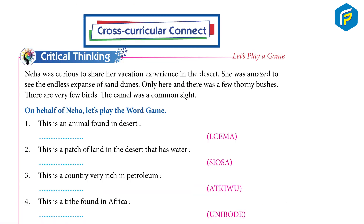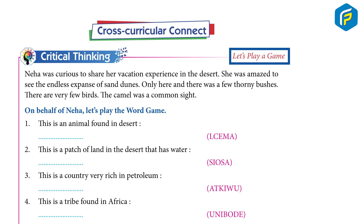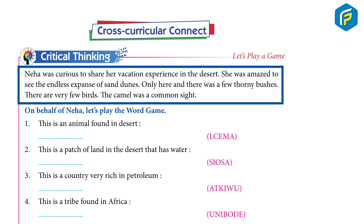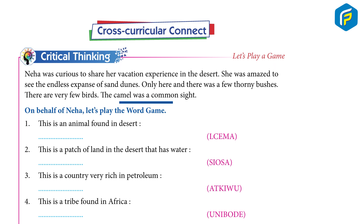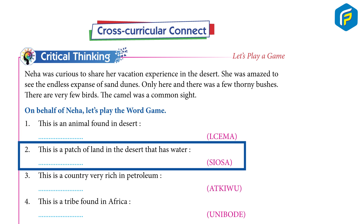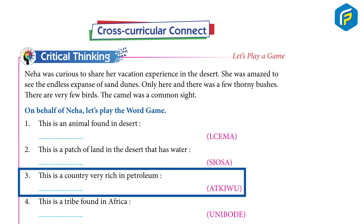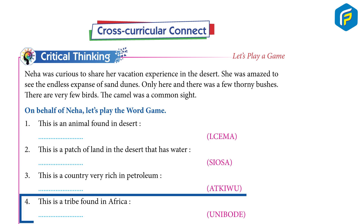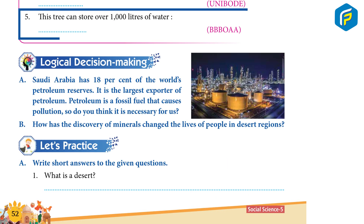Cross-curricular Connect — Critical Thinking — Let's Play a Game: Neha was curious to share her vacation experience in the desert. She was amazed to see the endless expanse of sand dunes, and here and there a few thorny shrubs. The camel was a common sight. On behalf of Neha, let's play the word game. 1. This is an animal found in the desert. 2. This is a patch of land in the desert that has water. 3. This is a country very rich in petroleum. 4. This is a tribe found in Africa. 5. This tree can store over 1,000 litres of water.